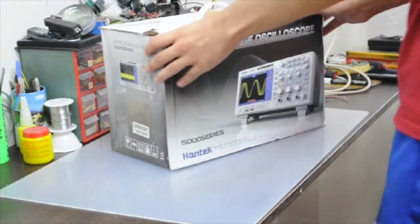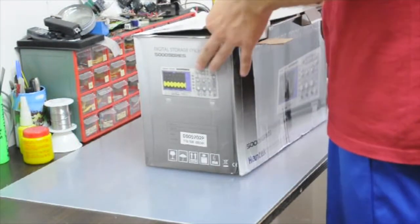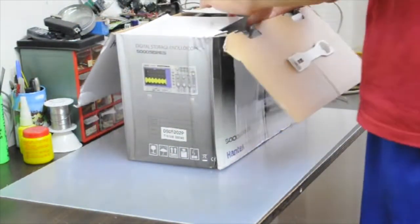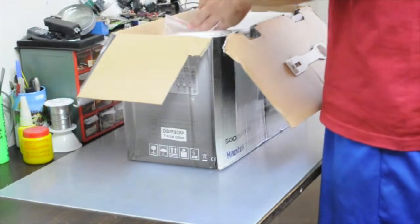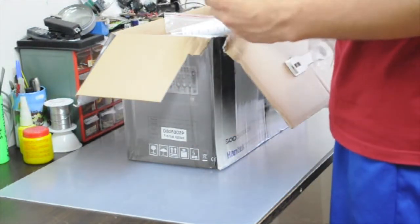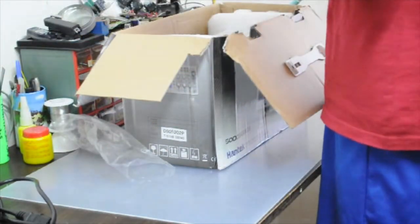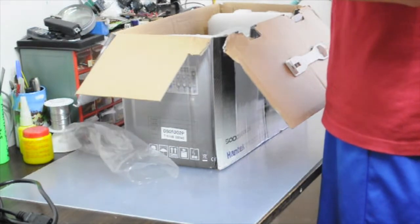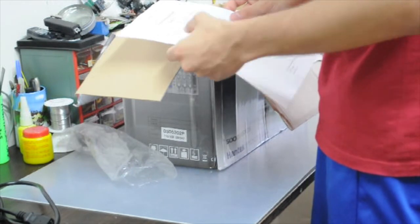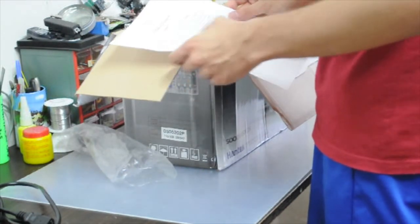We have the box with the scope. Just to see what we've got here: the power cord with the main plug, the packing list, the scope, two probes, the power cord, and the CD.